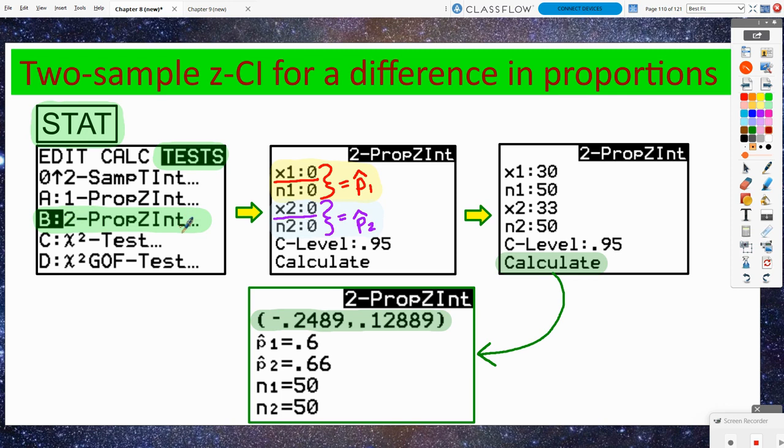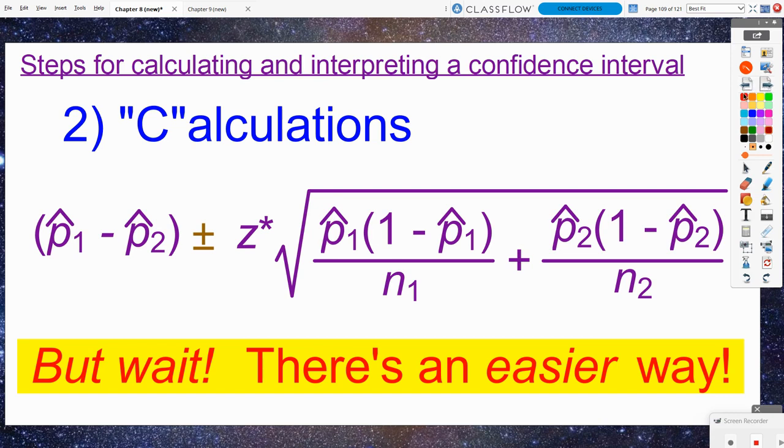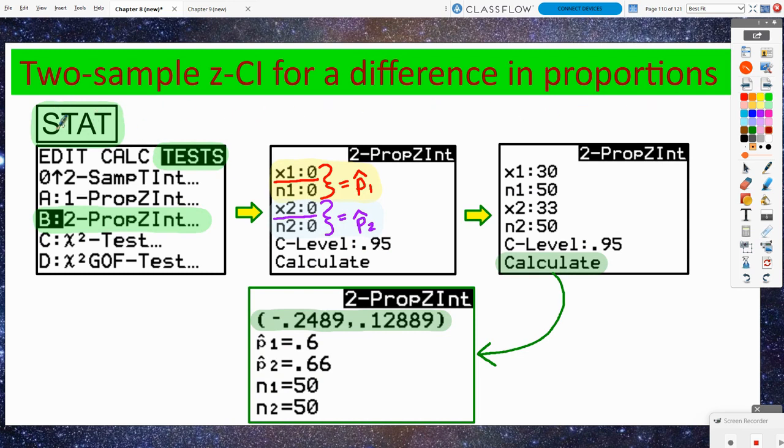Now, the thing is, if you're not going to plug and chug your way with this formula, you have to state the name of the procedure that you're doing here. You either have to state the name of the procedure or write out the full formula. Do you want to write all this out or would you rather practice on naming the name of this procedure? You can't just call it a two prop Z int because that's not the proper name of the procedure. It is a two sample Z confidence interval for a difference in proportions.